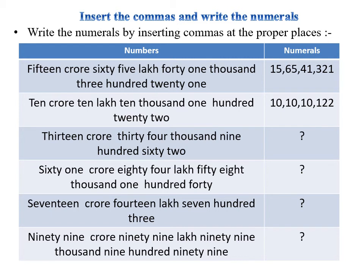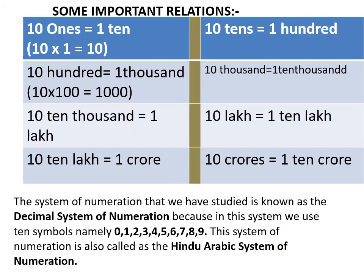Now some important relations between numbers. Ten ones equals one ten: ten × 1 = 10. Ten tens equals one hundred. Ten hundreds equals one thousand: ten × 100 = 1,000. Ten thousands equals one ten-thousand. Ten ten-thousands equals one lakh. Ten lakhs equals one crore.